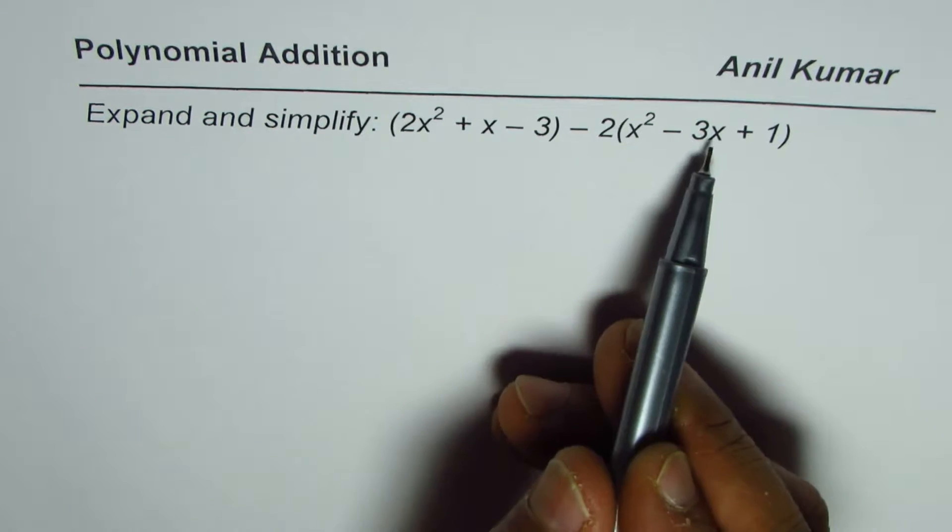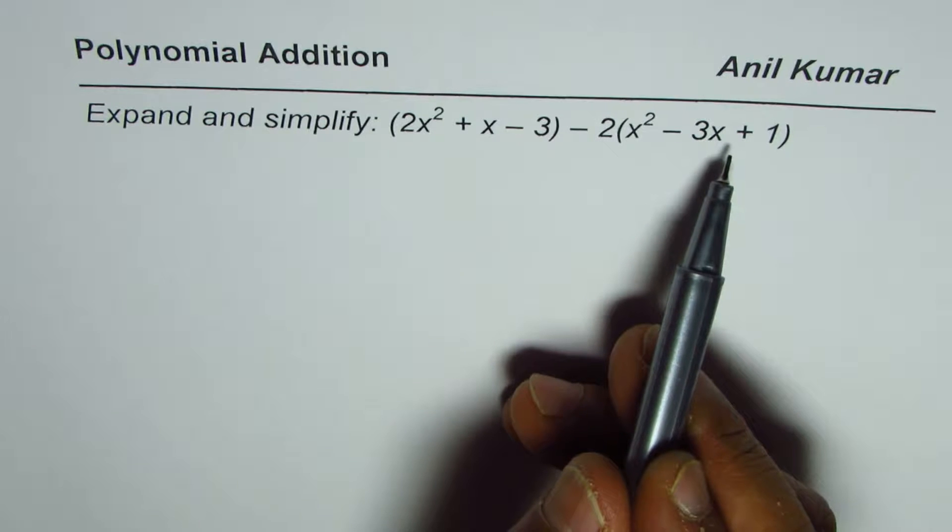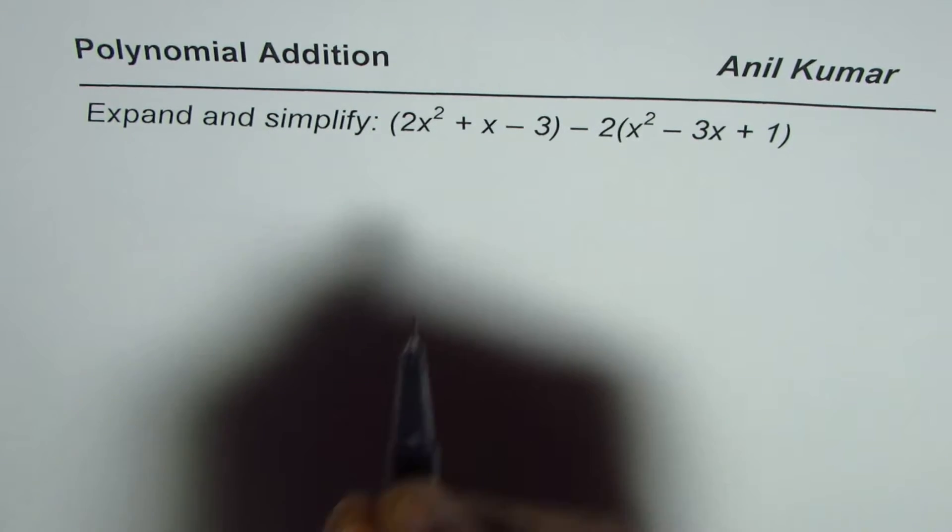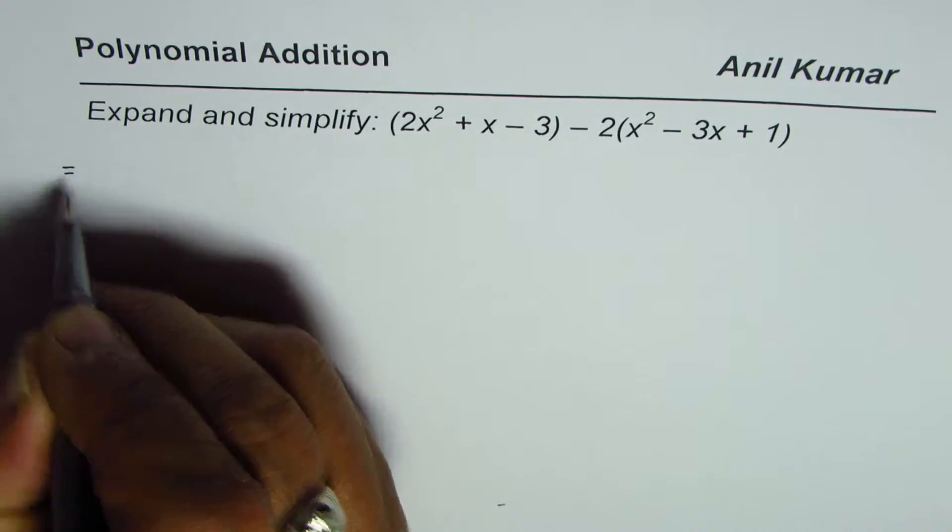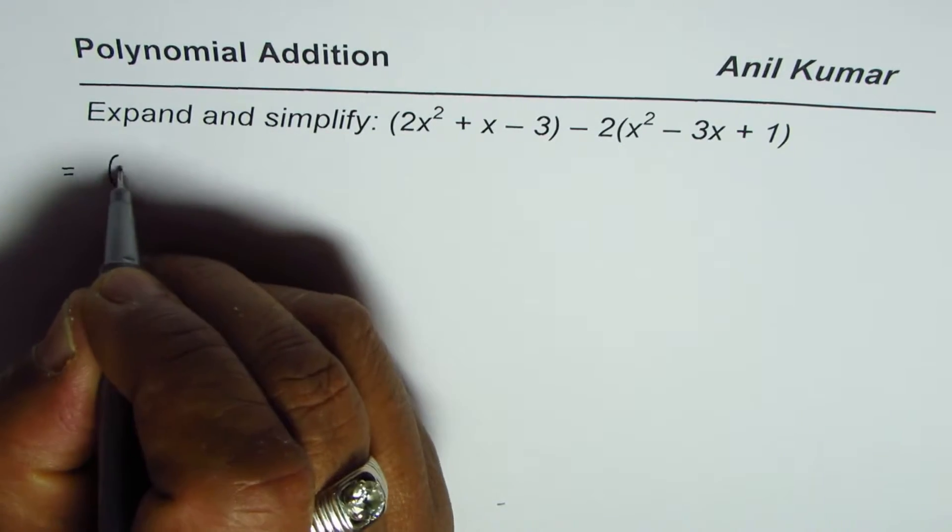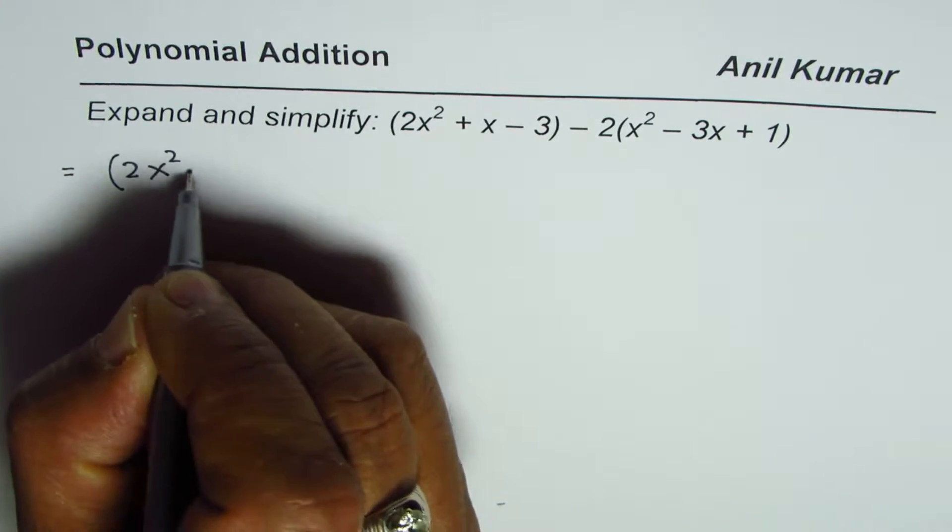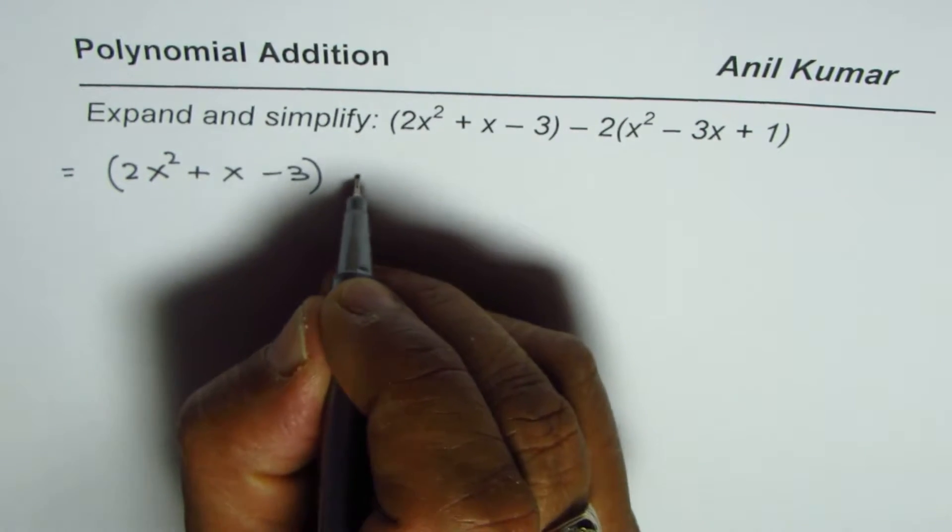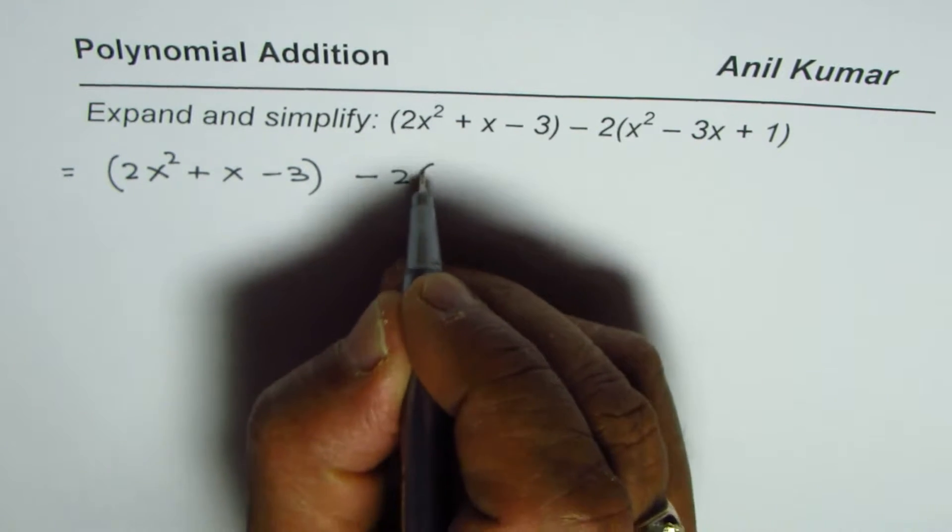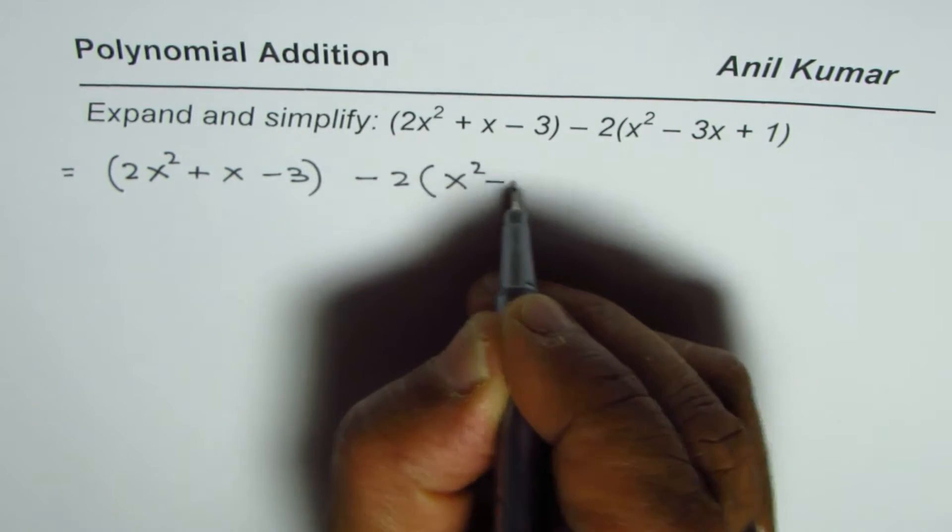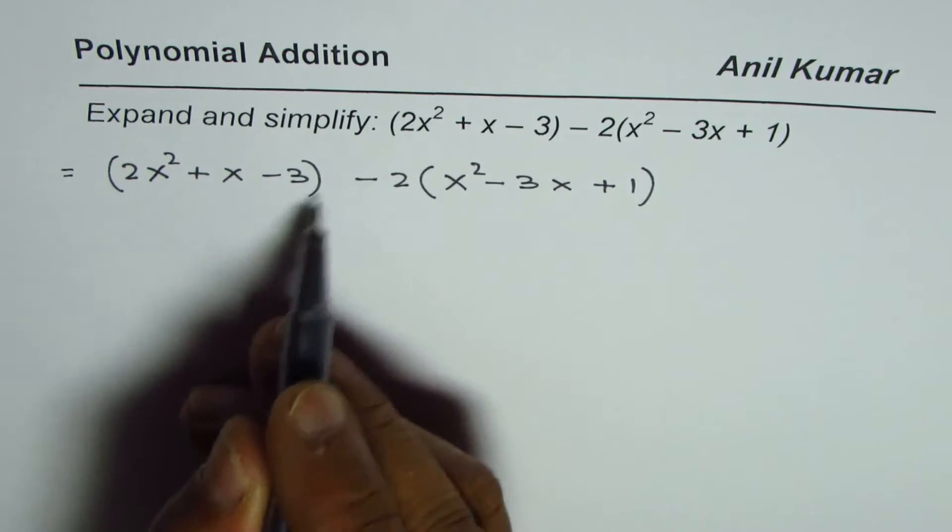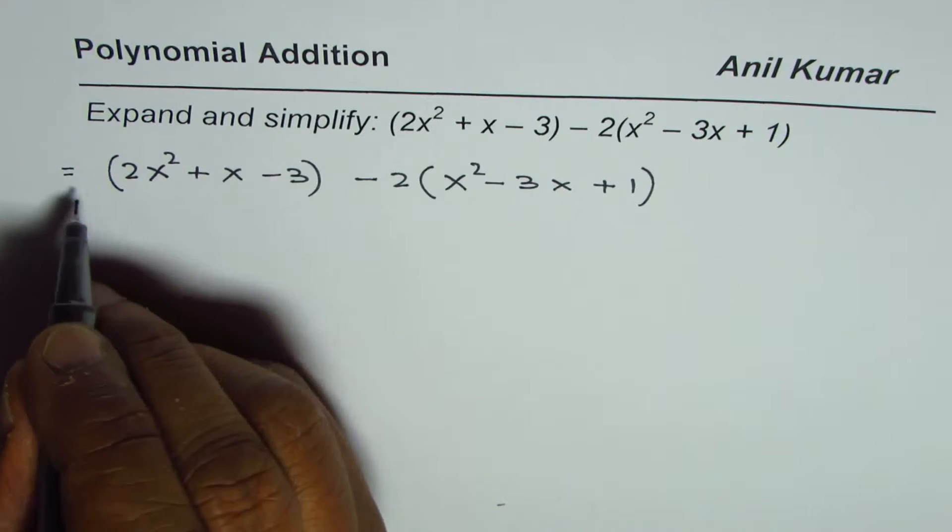That is the strategy. Let's rewrite this polynomial as the first half, which is 2x² + x - 3. I'm just copying it first: minus 2 times (x² - 3x + 1). So let's open the bracket here.